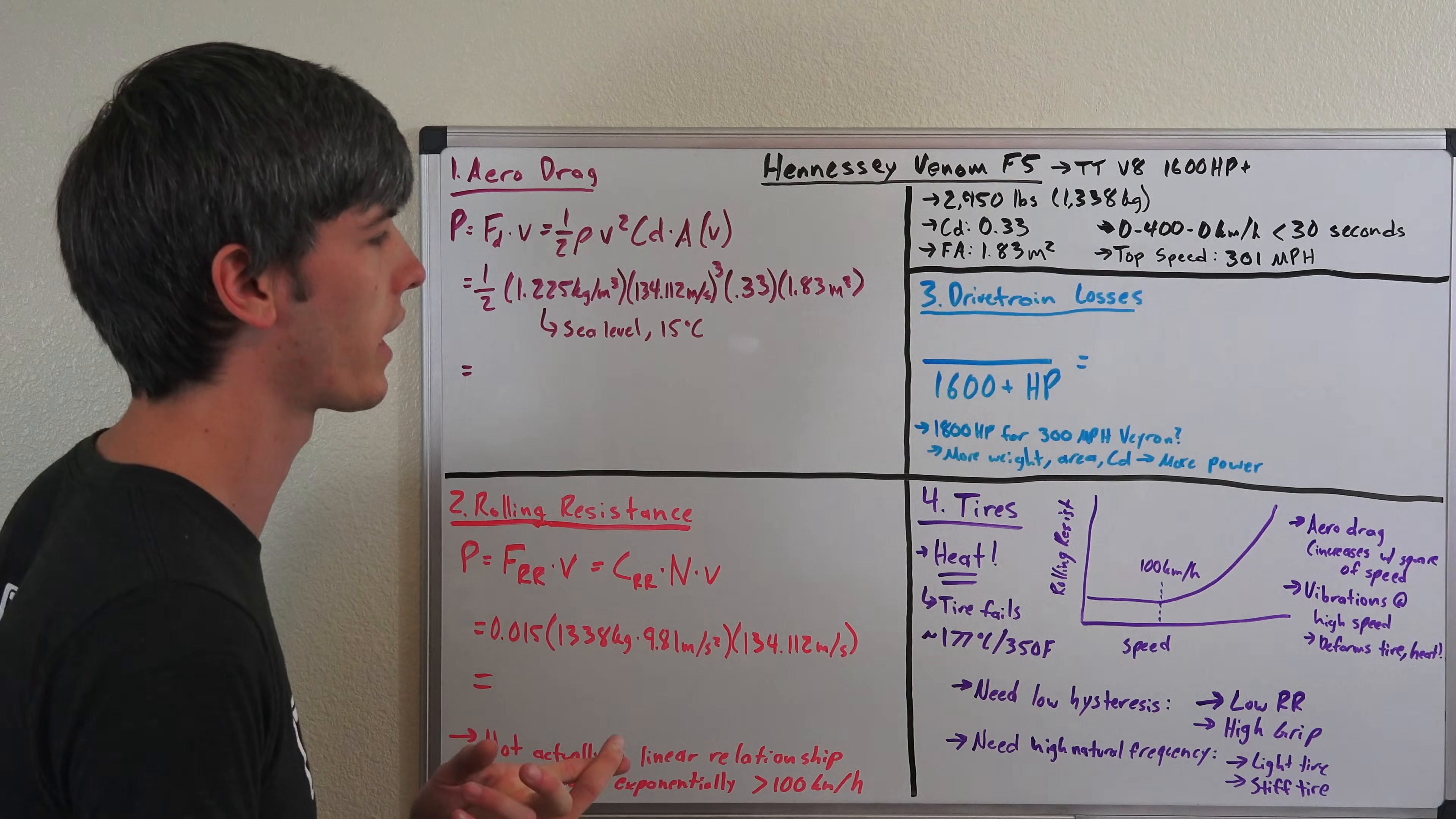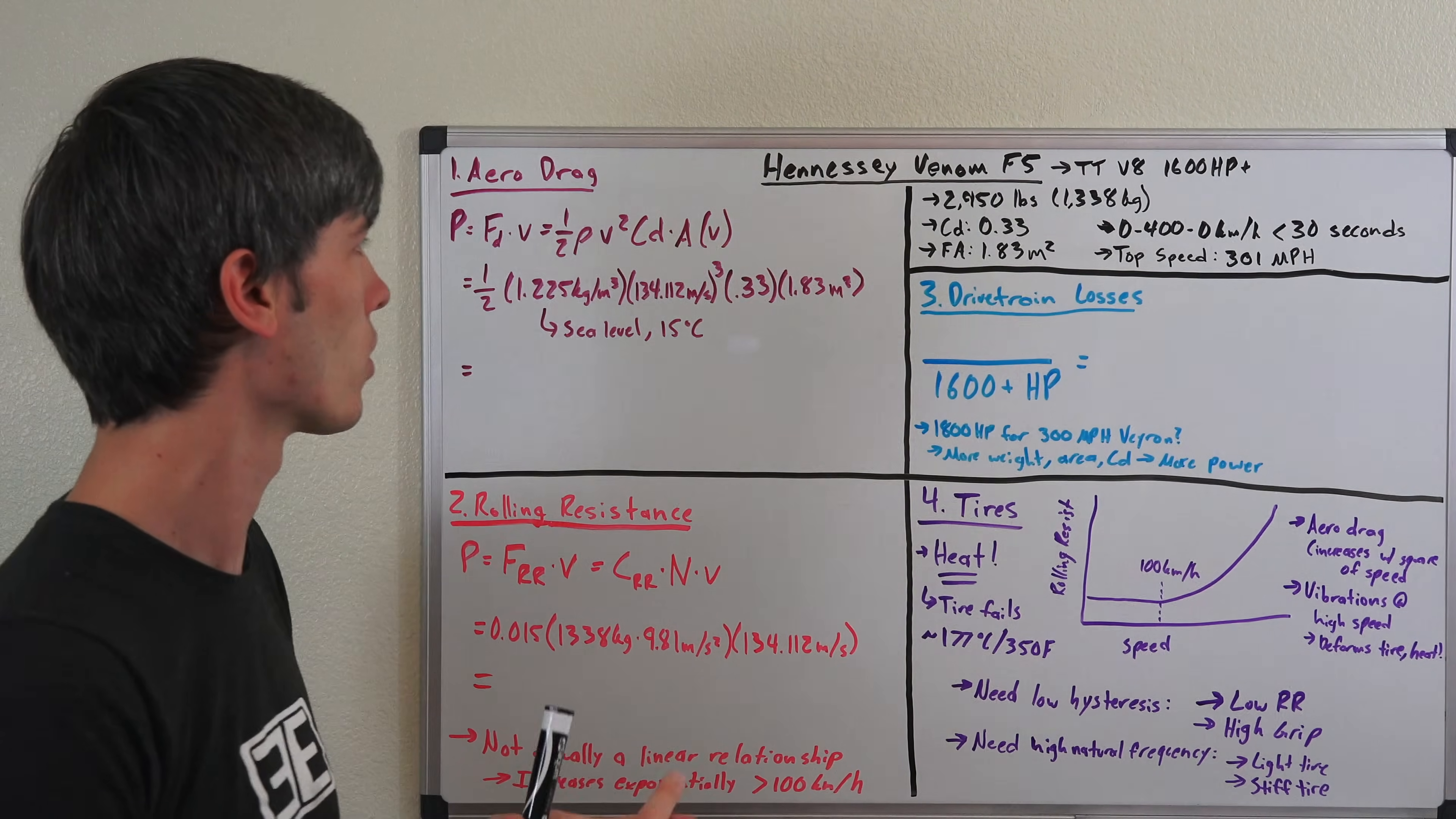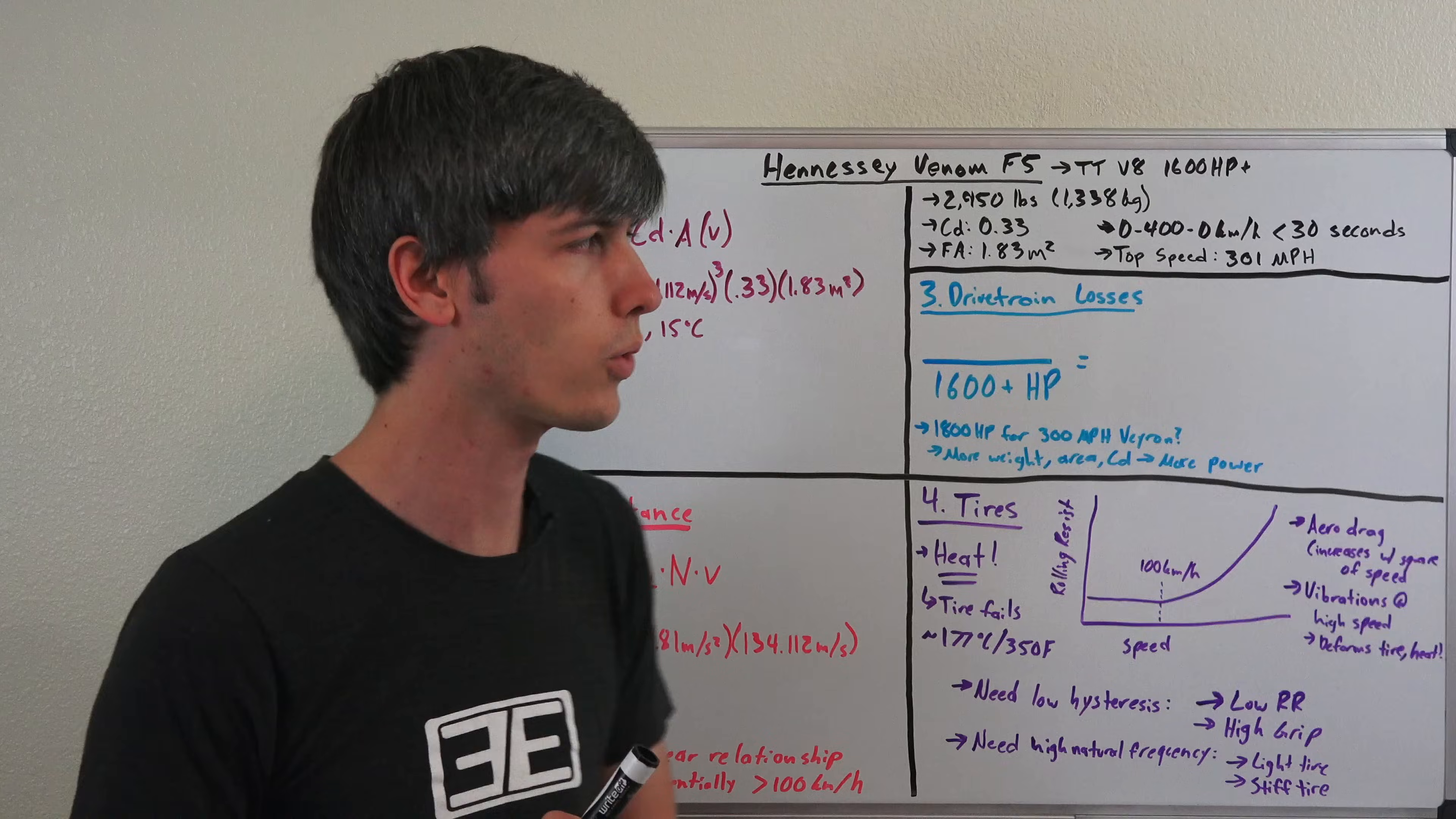Now there's two things we need to talk about here. First of all, does it have enough power to hit that based on its specifications? And then we're also going to get into tires. In order to know if it has enough power, there's three things we need to look at: the aerodynamic drag on the vehicle at 300 miles per hour, the rolling resistance, and the drivetrain losses.